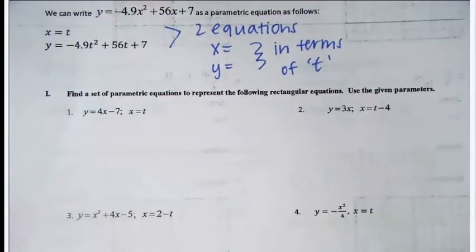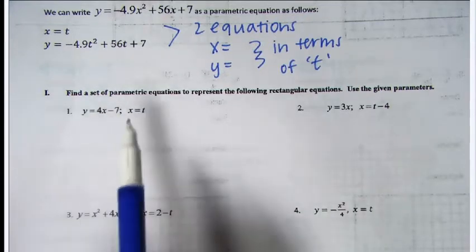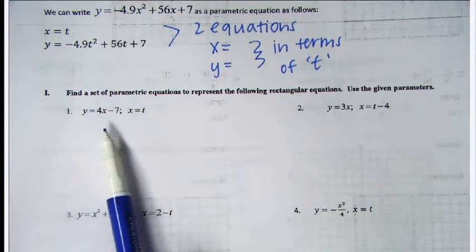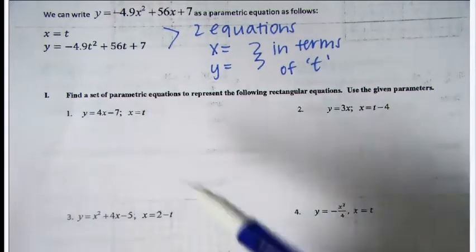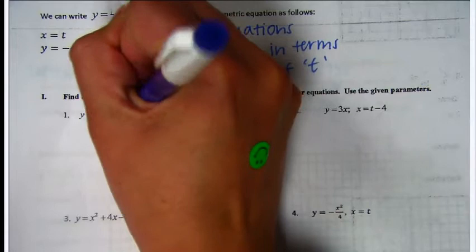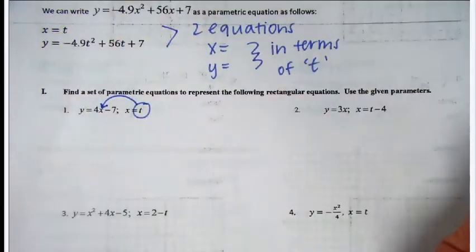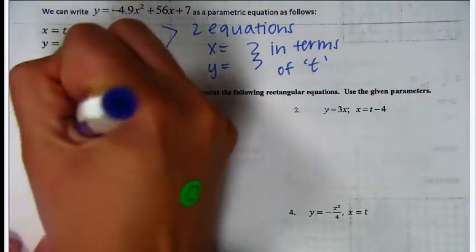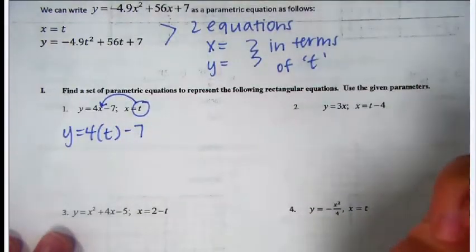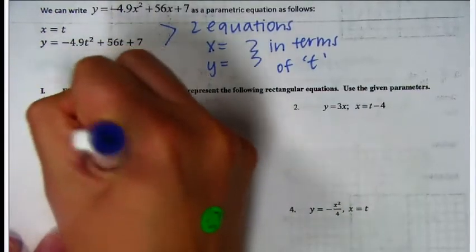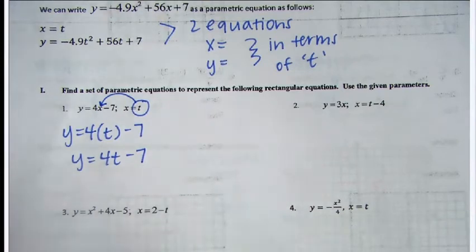They are going to give us a rectangular equation — rectangular means it has x and y in the same equation. On number one, the rectangular equation is y equals 4x. The equation x equals t is parametric because it has the t. Since x equals t, I'm going to take that value and plug it in for x, so y equals 4t minus 7. We've turned the y equation into a parametric.